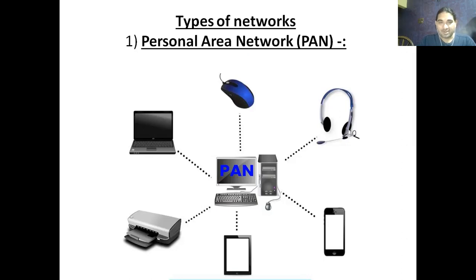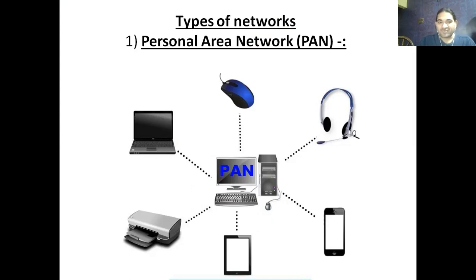As shown in the picture, one PAN network can connect to different things: an iPad, a mobile phone, headphones, a wireless mouse, a wireless printer, and a wireless laptop. The best example you can give is Wi-Fi.